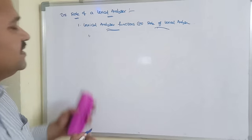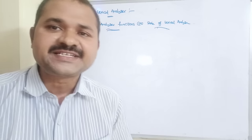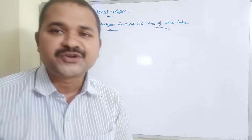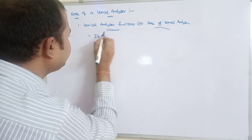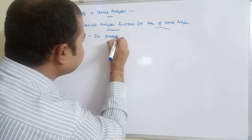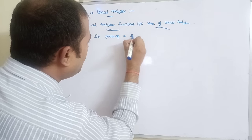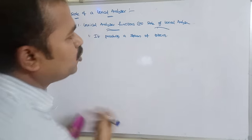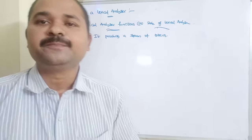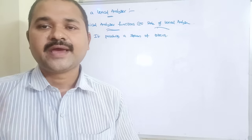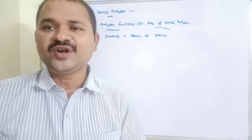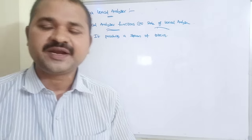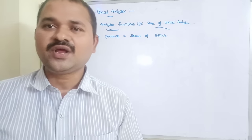The first task of the lexical analyzer is to read the source program character by character and produce a stream of tokens. A token may be either a variable name (that is, an identifier), a constant, a keyword, or an operator.